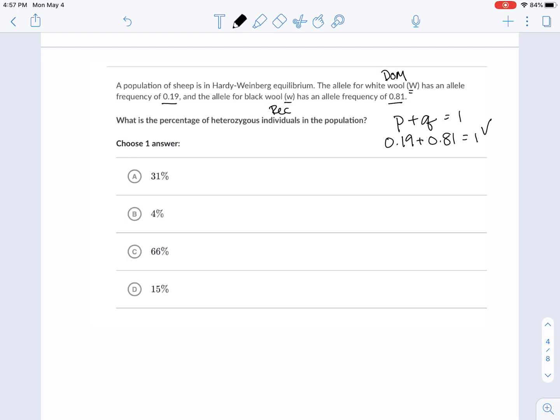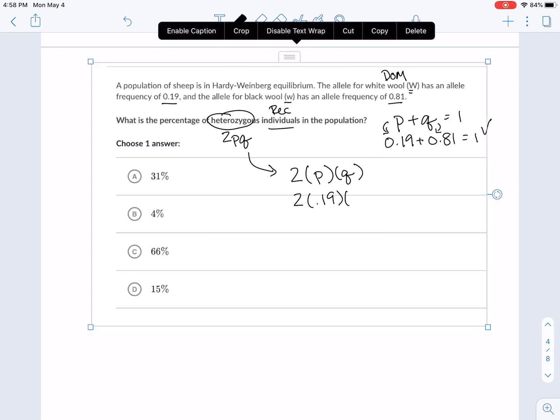So let's see what it wants us to do. The percentage of heterozygous individuals. How do we get a heterozygous individual with Hardy-Weinberg standards? 2PQ. So we know P. We know Q. So let's multiply them and then times 2. So you're going to do 2 times P times Q. In that case, we're going to have 2 times 0.19 times 0.81.